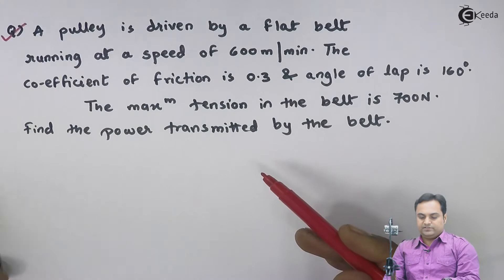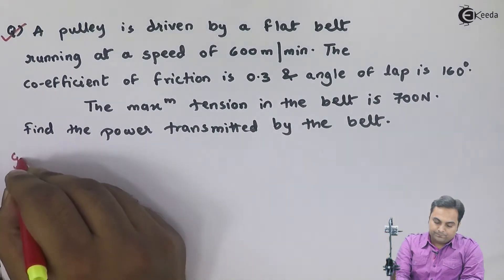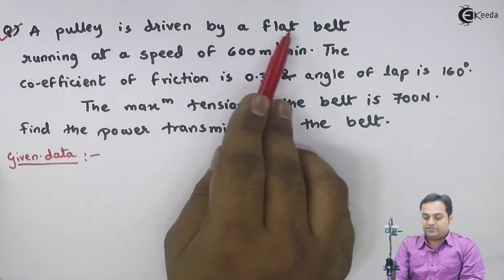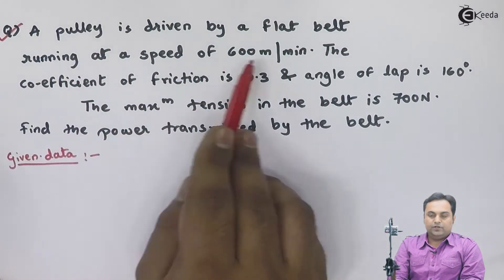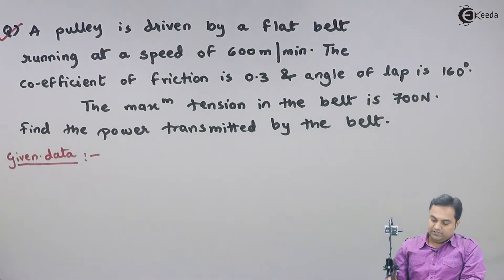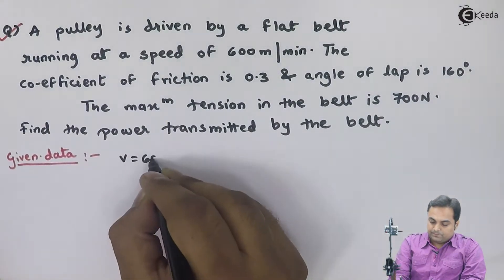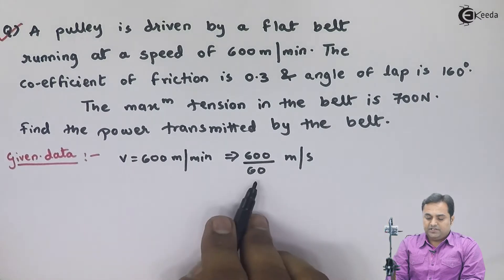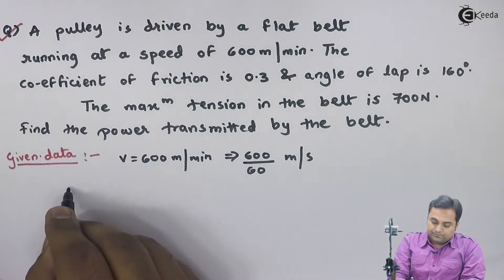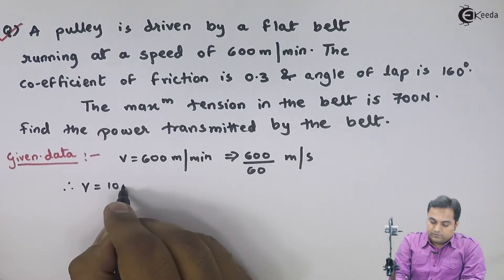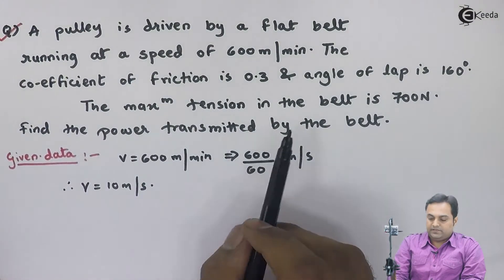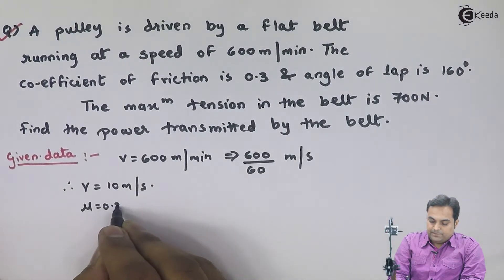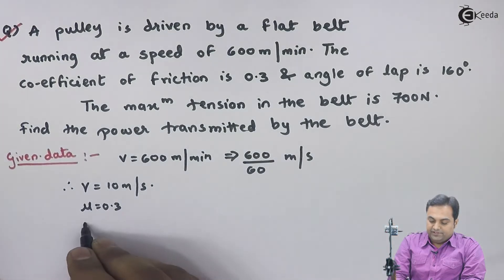Whatever is given here, I will write it in the form of data. A pulley is driven by a flat belt running at a speed of 600 meters per minute. That is the linear speed of the belt. I'll convert it into meters per second by dividing by 60. Therefore, V equals 10 meters per second. Next, the coefficient of friction is 0.3. Mu is given.